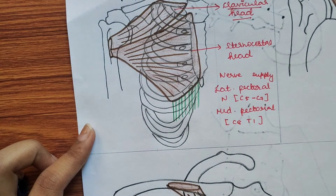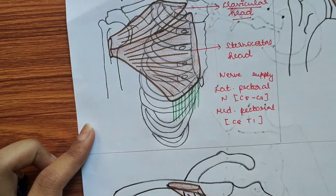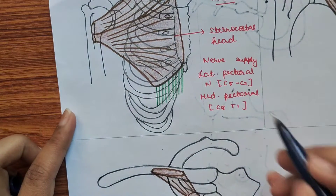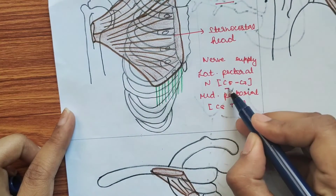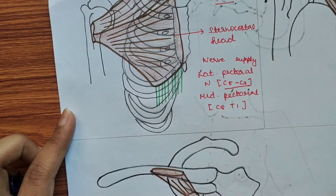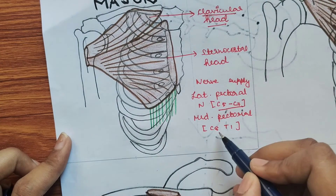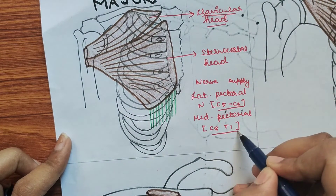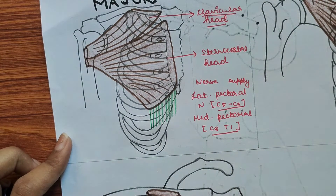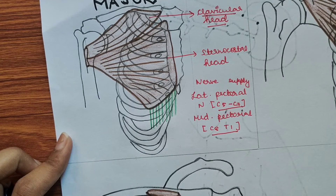The nerve supply is from the lateral and medial pectoral nerves. The lateral pectoral nerve has a root value of C5 to C7, and the medial pectoral nerve has a root value of C8 and T1.